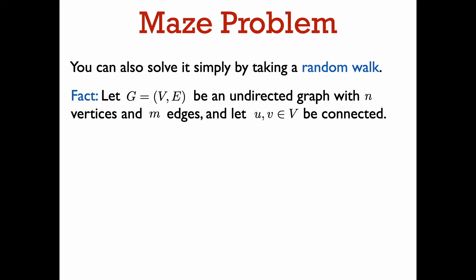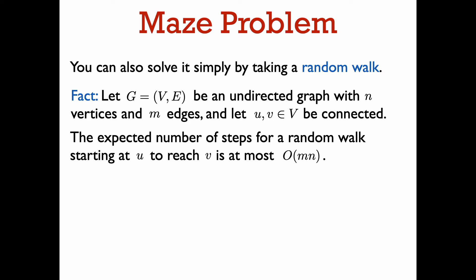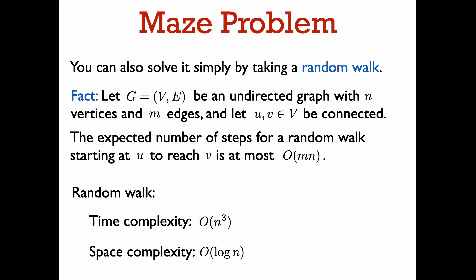and u and v are two vertices of G that are connected — that is, there exists a path between them — then a random walk will reach v from u within order m times n many steps in expectation. While the time complexity is therefore worse than breadth or depth-first search, the only thing you have to remember is the name of the node you are currently at. We can always upper bound m times n by n cubed, so the time complexity is order n cubed. But for the space complexity, all we have to do is remember the name of the node we're at, so this algorithm actually takes logarithmic space.